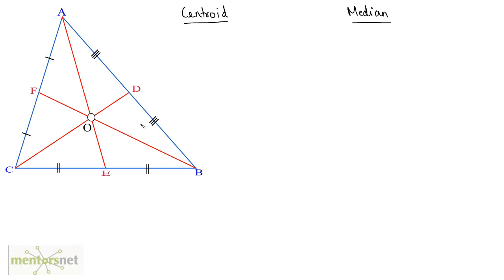Now let us look at some terms or concepts related to triangles in a brief manner. We won't go into much detail as most people know about this. What is a centroid and what is a median? Let me first write what the medians are in triangle ABC. The medians are AE, CD and BF. These are the three medians of this triangle.